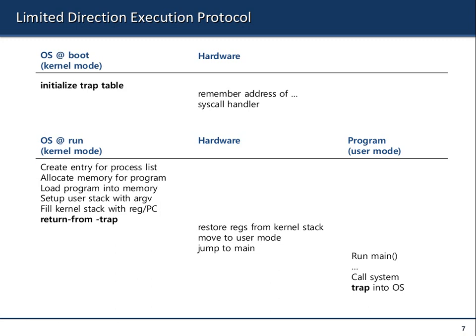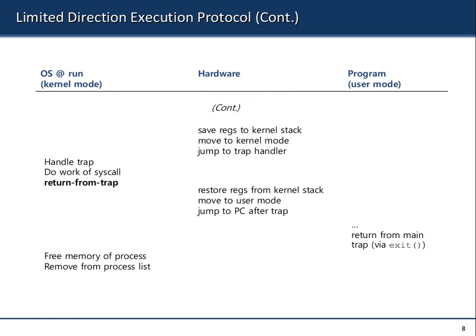When the trap into OS occurs, the hardware saves the registers to the kernel stack, moves to kernel mode, and jumps to the trap handler. Once in kernel mode, it does the work of the syscall — like a read. Then it restores registers from the kernel stack, moves to user mode, and jumps to the program after the trap.